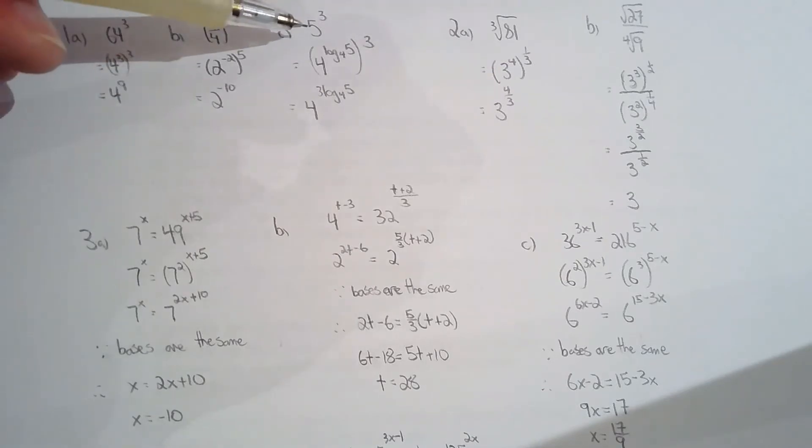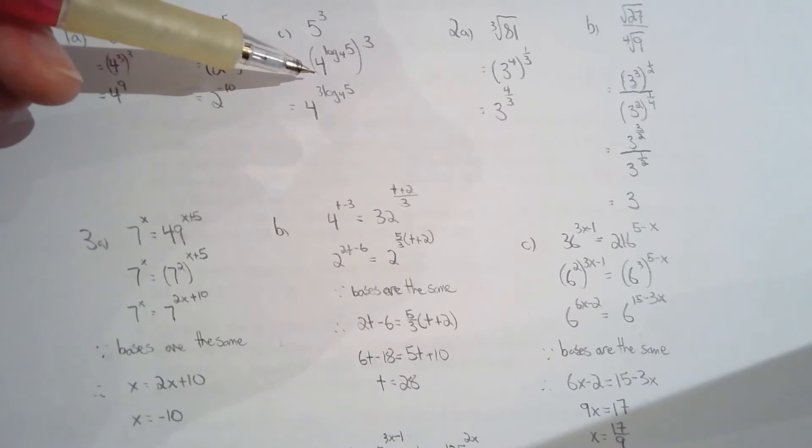Now C, this one's the trickiest one because you want to change 5 to a power with the base of 4. So what you have to do here is you have to understand that powers and logarithms of the same base are inverses of each other.